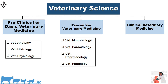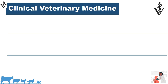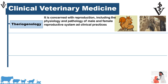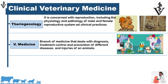The third branch is clinical veterinary medicine. In this we study subjects related to clinical studies. The subjects included are theriogenology, veterinary medicine, and veterinary surgery. Theriogenology is a science concerned with reproduction, including the physiology and pathology of the male and female reproductive system, and the clinical practices used in theriogenology clinics.